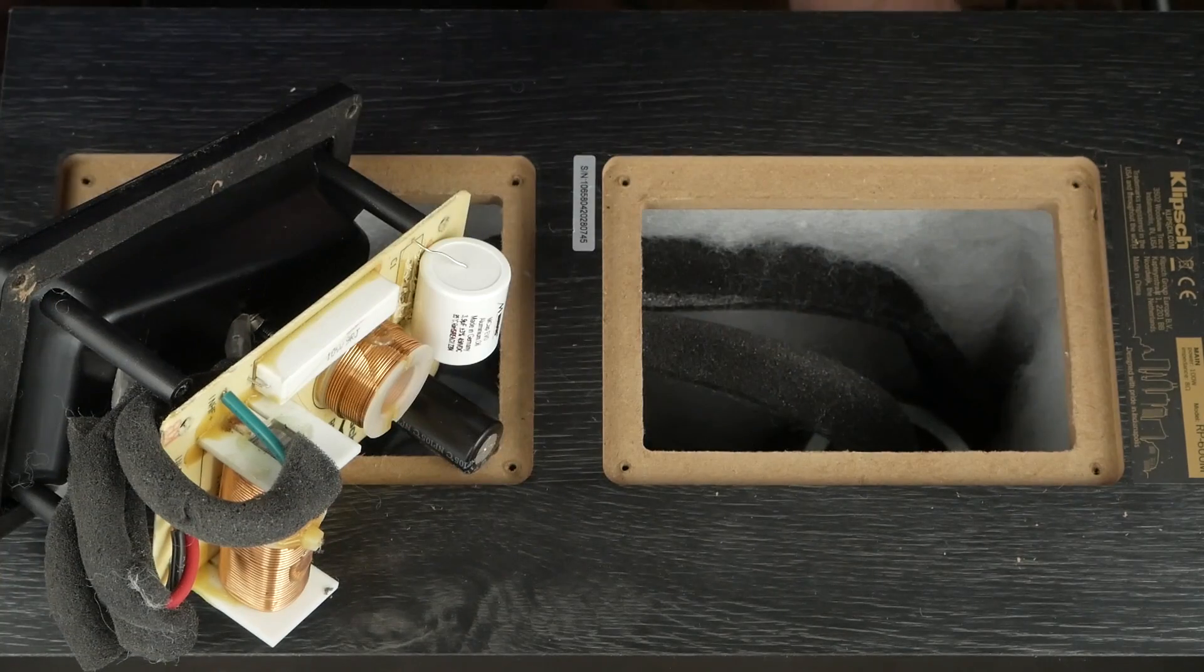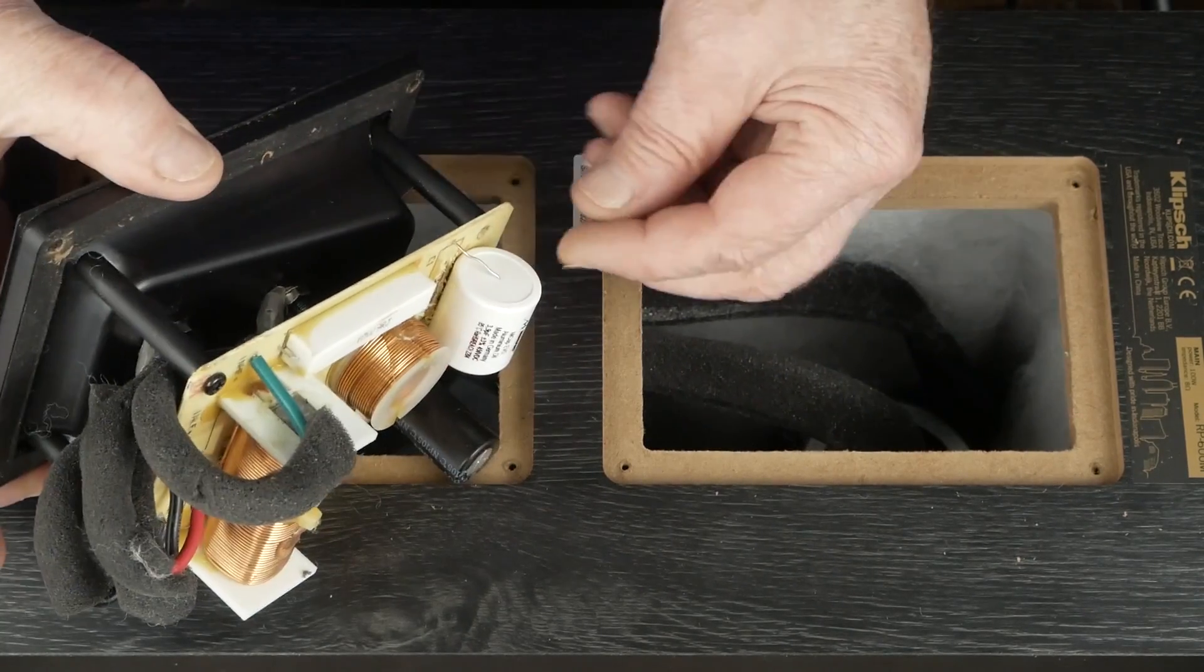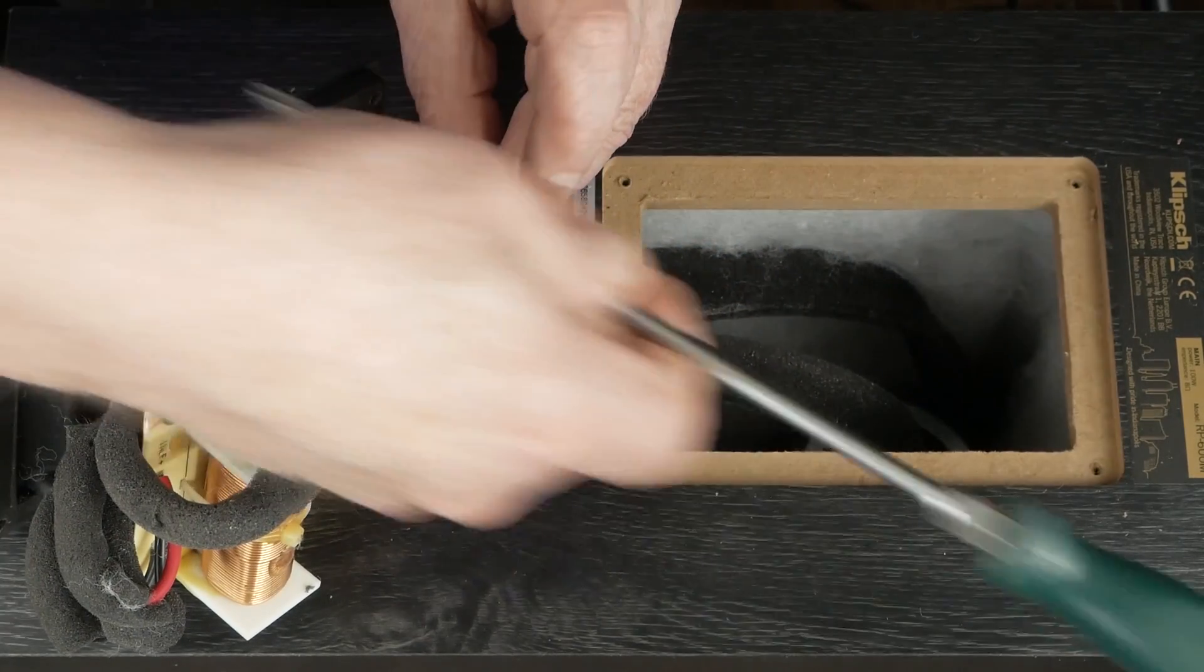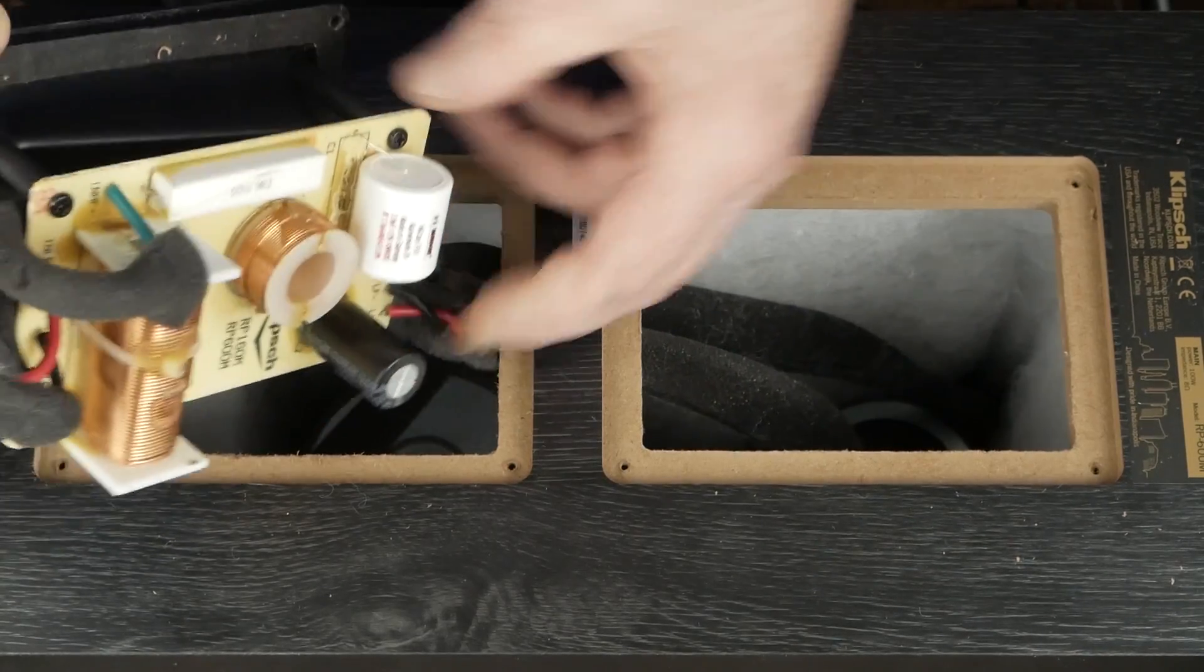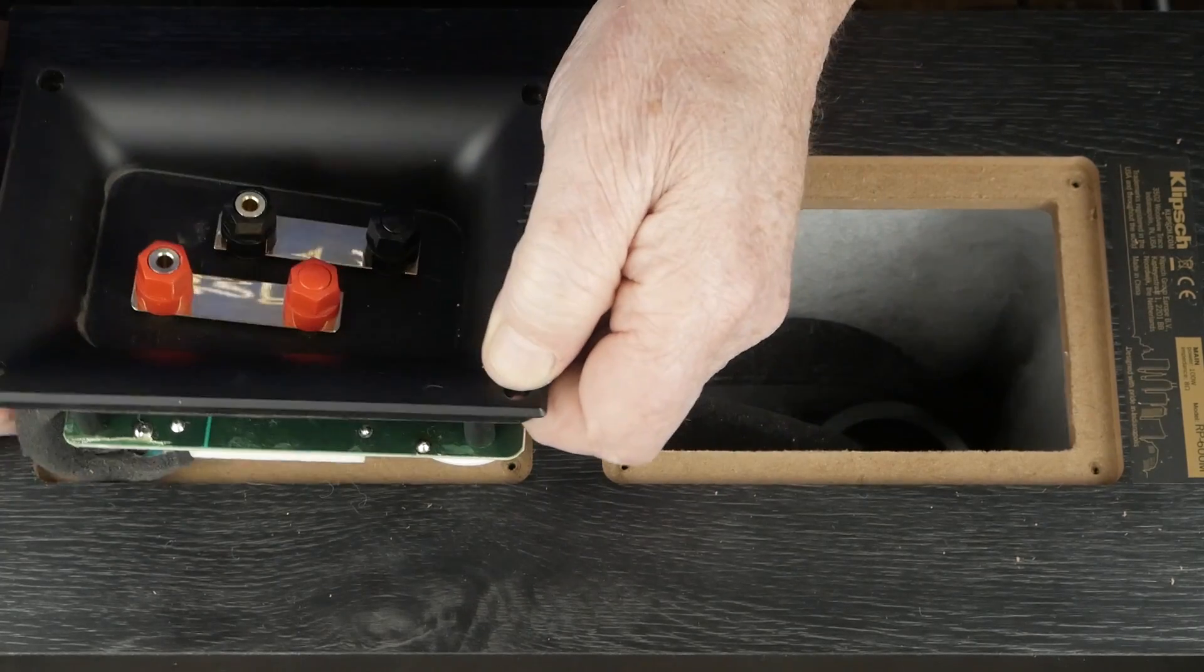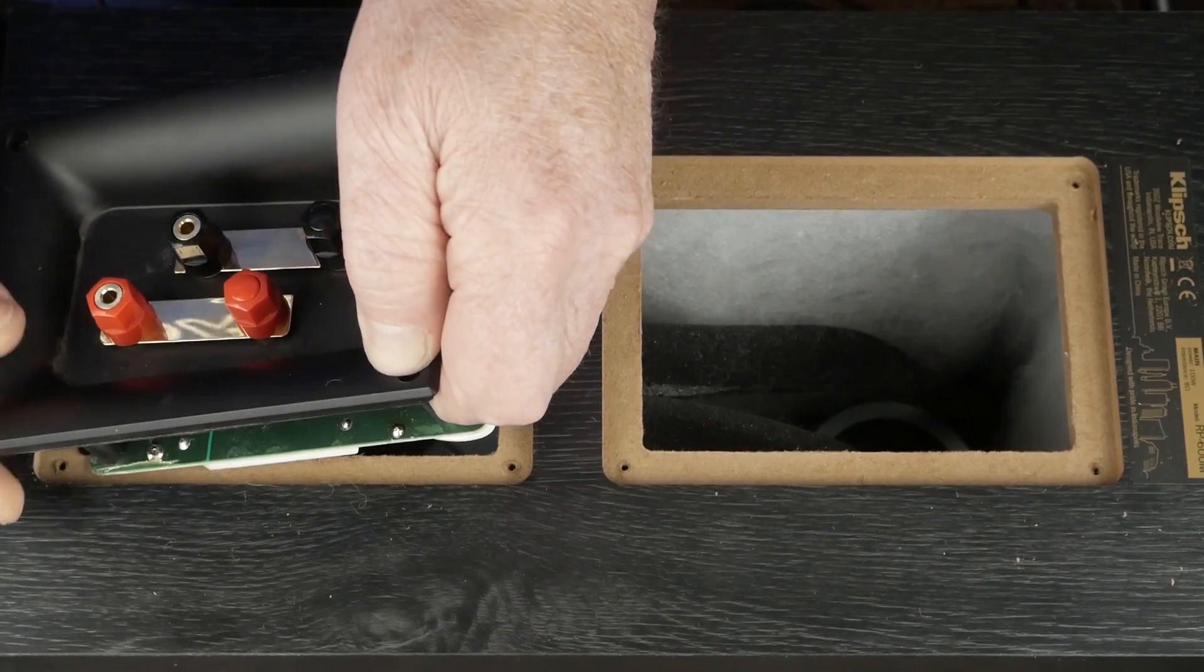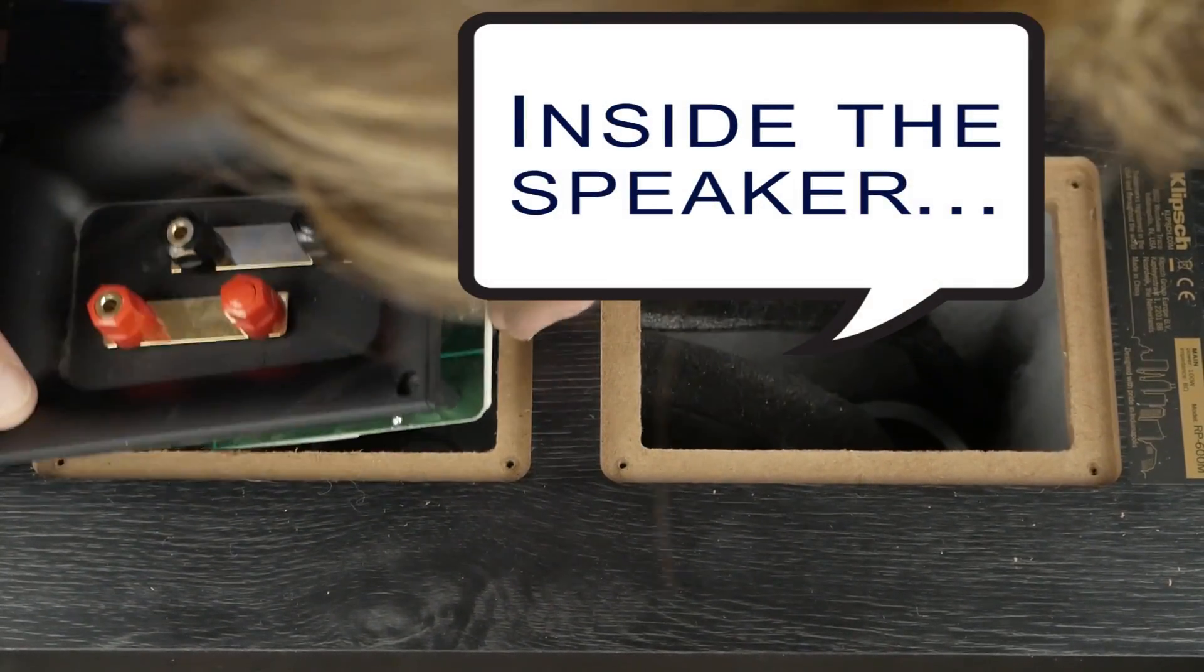Obviously if you're planning on bi-amping these speakers you don't want to put those jumpers in, and you would just install that capacitor. And honestly if I was going to be bi-amping speakers, I would be putting an active crossover on the front end of the amps and then just hooking them directly to the speakers anyway, and not using the passive crossover inside the amp.